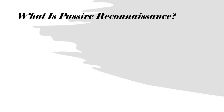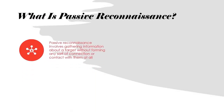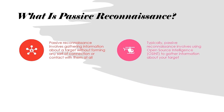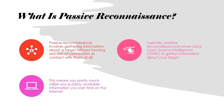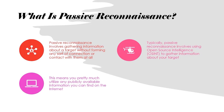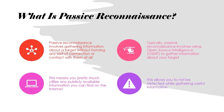Passive reconnaissance involves gathering information about a target or a target network without actually connecting to them at all. Typically, passive reconnaissance involves using open source intelligence — you may have seen this referred to as OSINT — to gather information about your target. It means you're going to utilize any publicly available information you can find on the internet to formulate your attack, which is not illegal because it's publicly available.